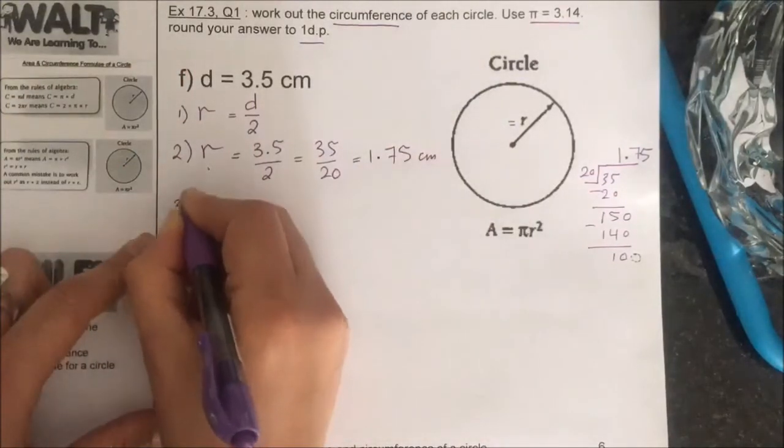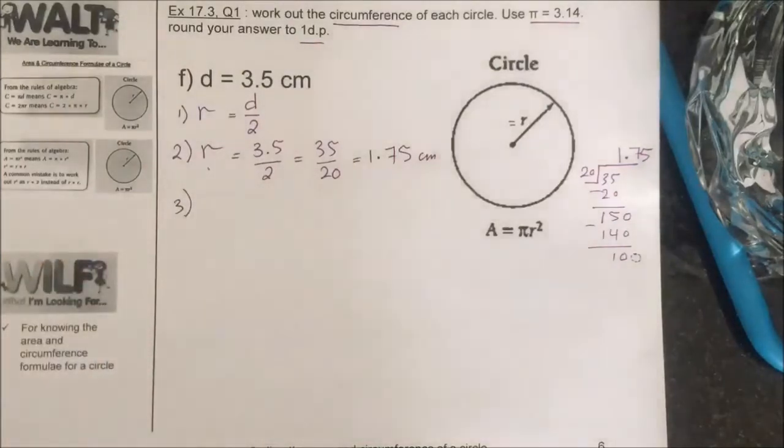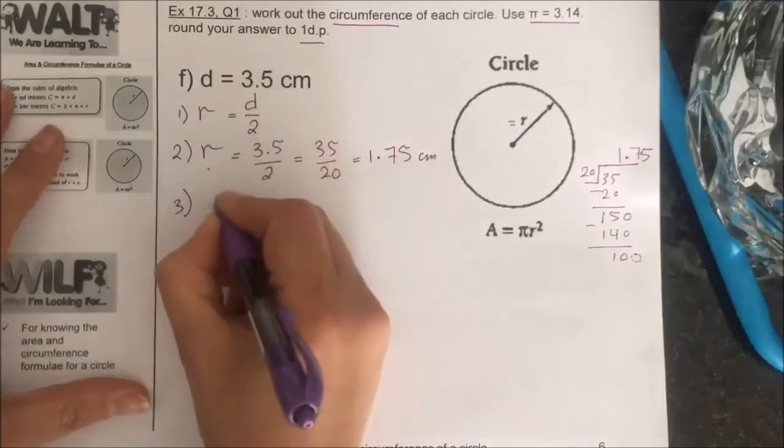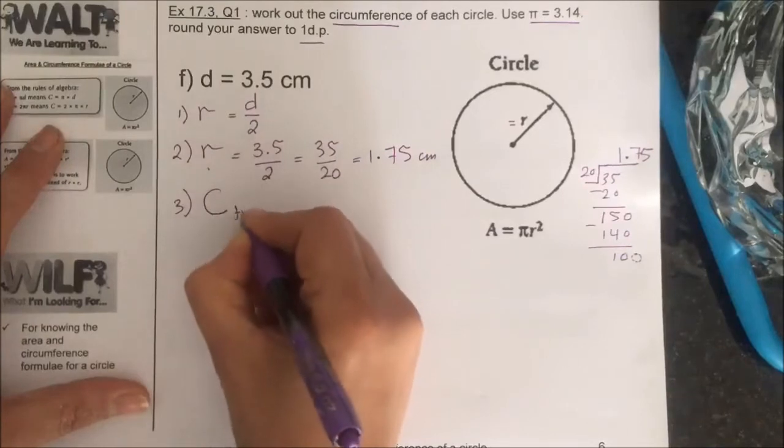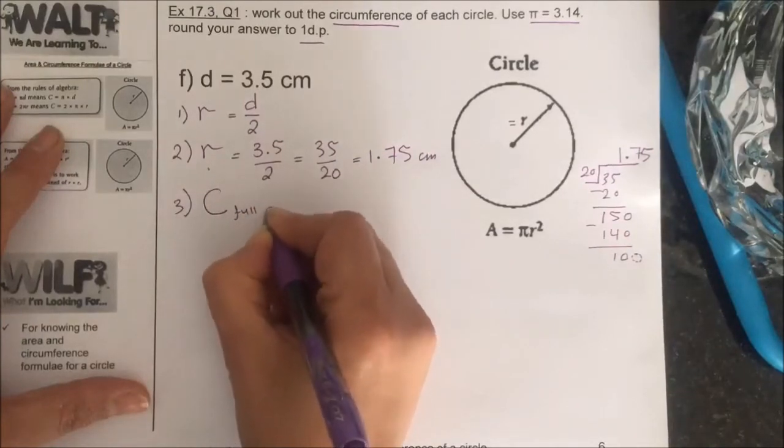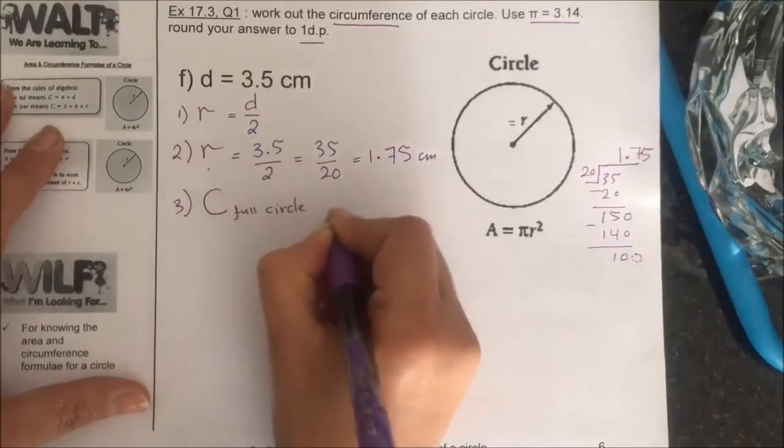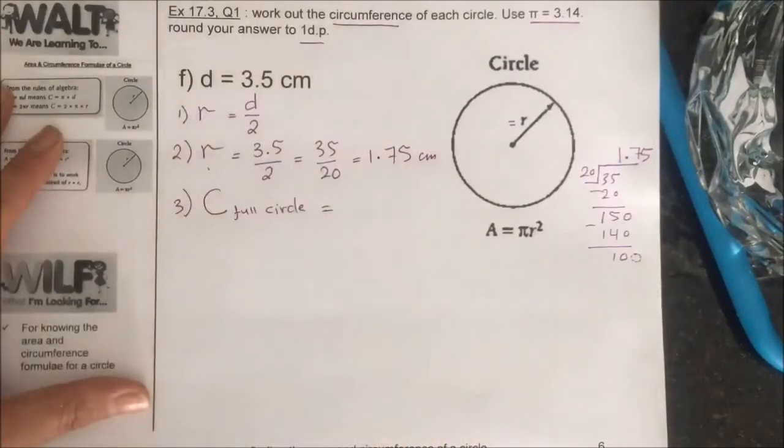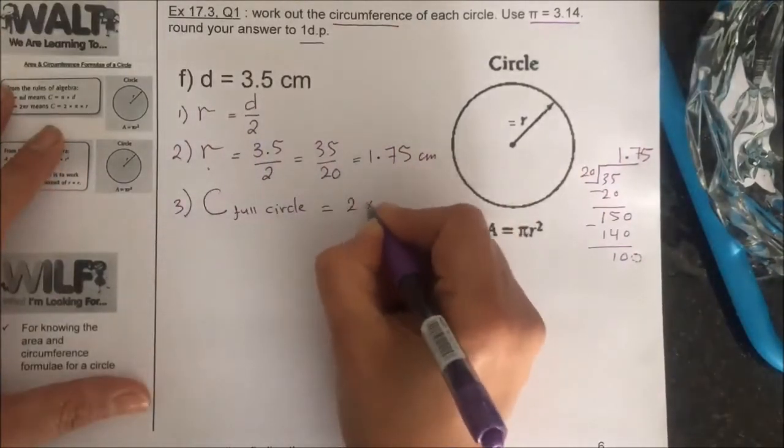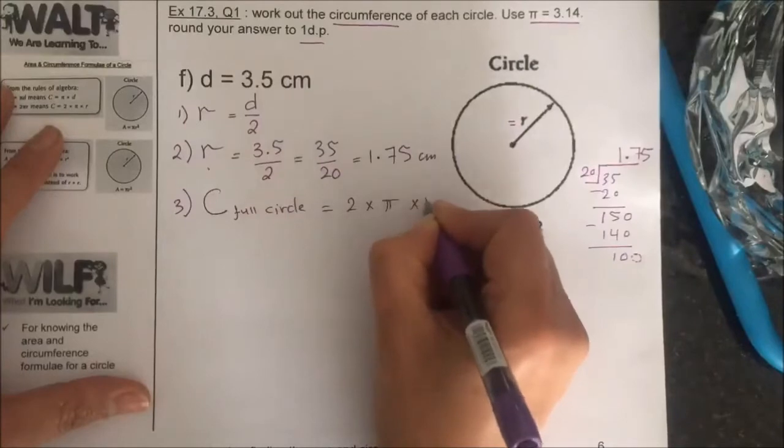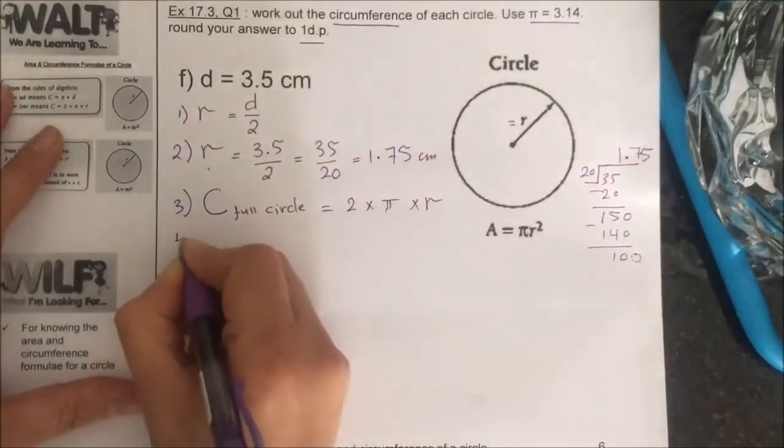Step number three: write the general formula of finding the circumference of a circle. Circumference for a full circle is equal to 2 times pi times r.